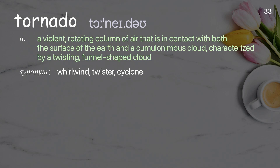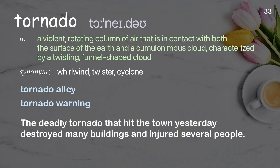Tornado: A violent, rotating column of air that is in contact with both the surface of the earth and a cumulonimbus cloud, characterized by a twisting, funnel-shaped cloud. Examples: Tornado alley. Tornado warning. The deadly tornado that hit the town yesterday destroyed many buildings and injured several people.